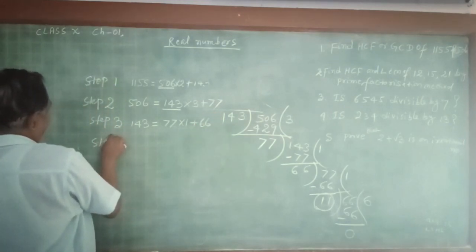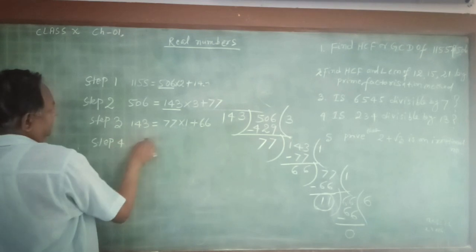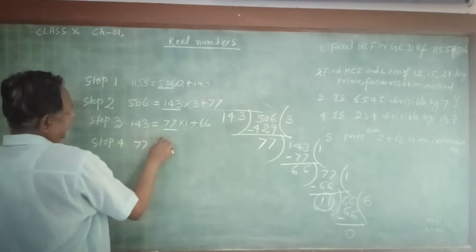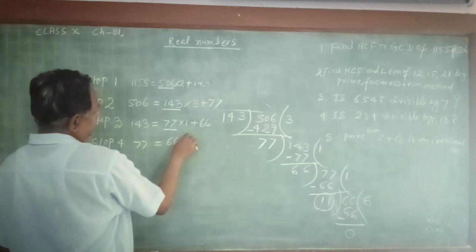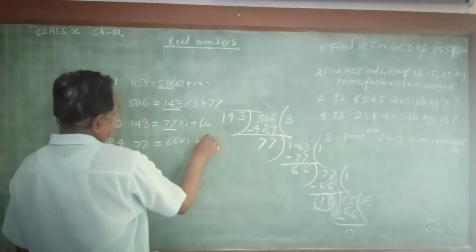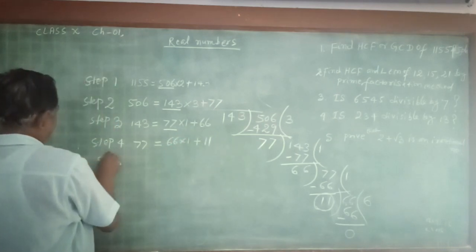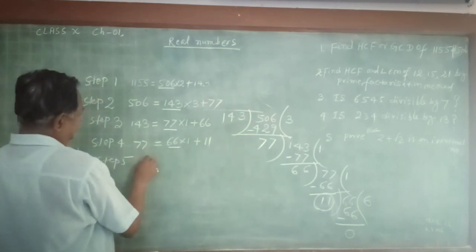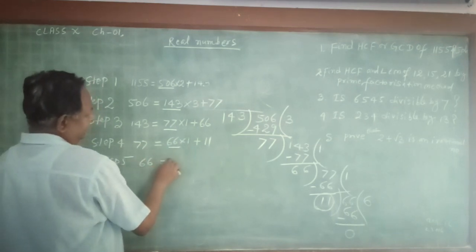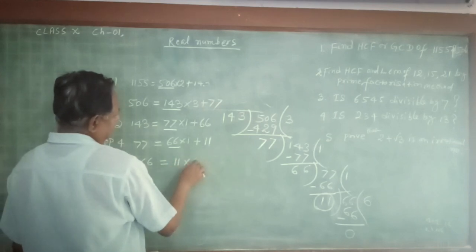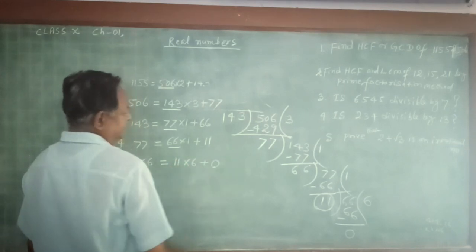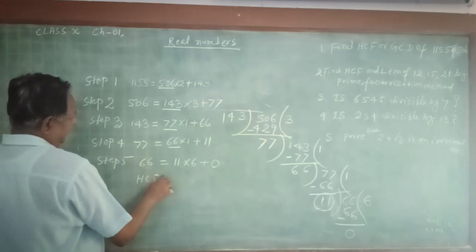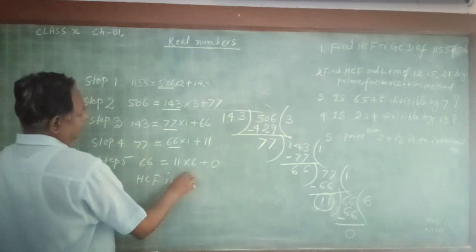Step 4: 77 can be written as 66 multiplied by 1, plus 11. Step 5: 66 can be written as 11 multiplied by 6, plus 0. So the required HCF is 11.